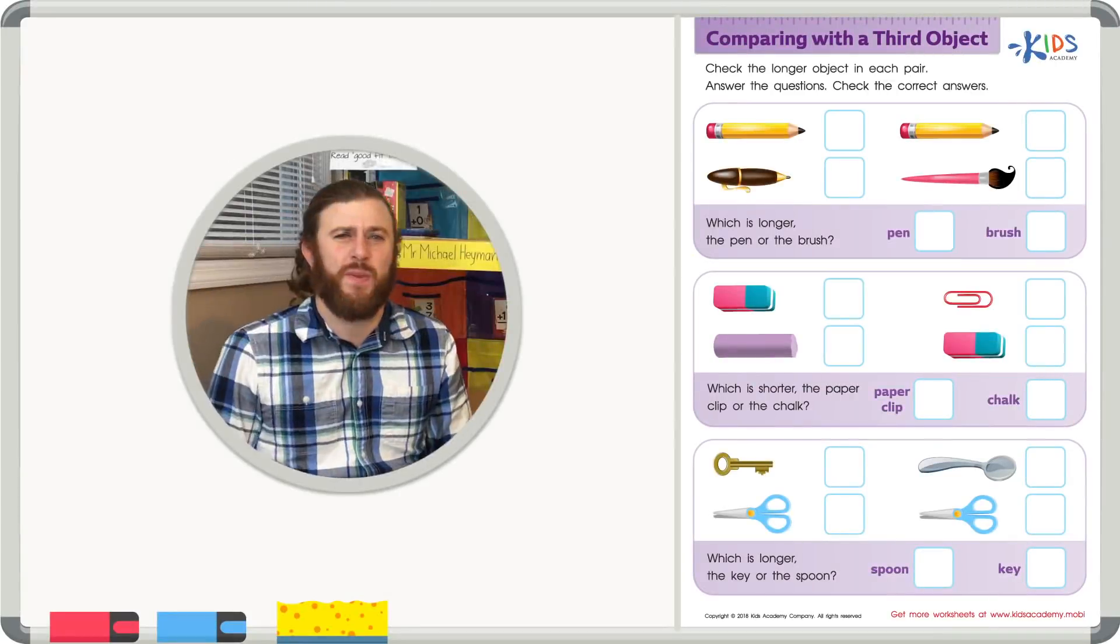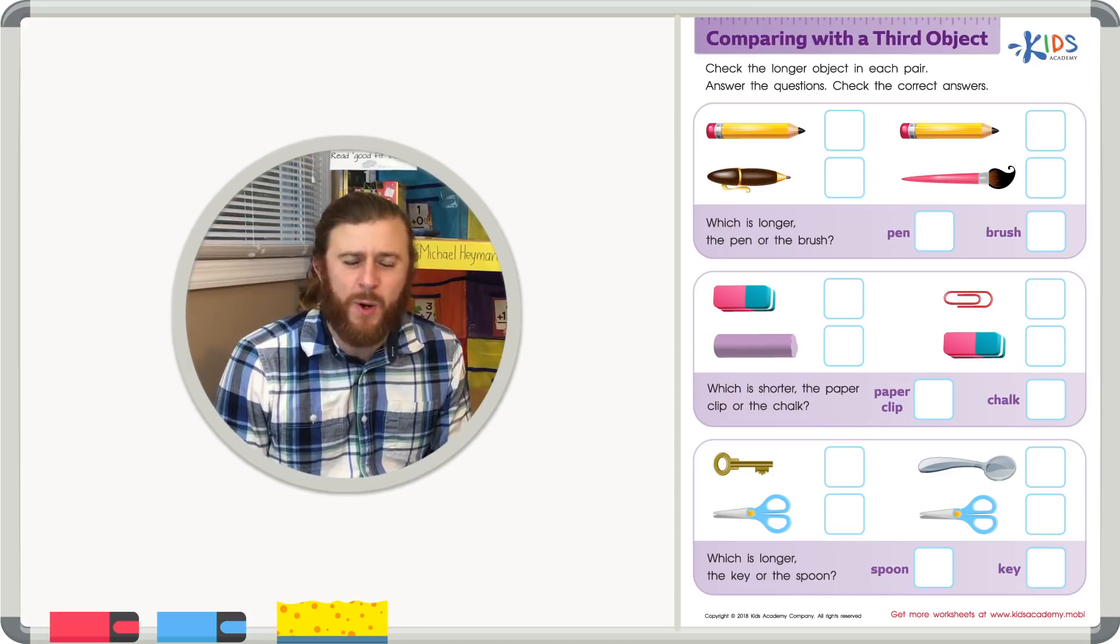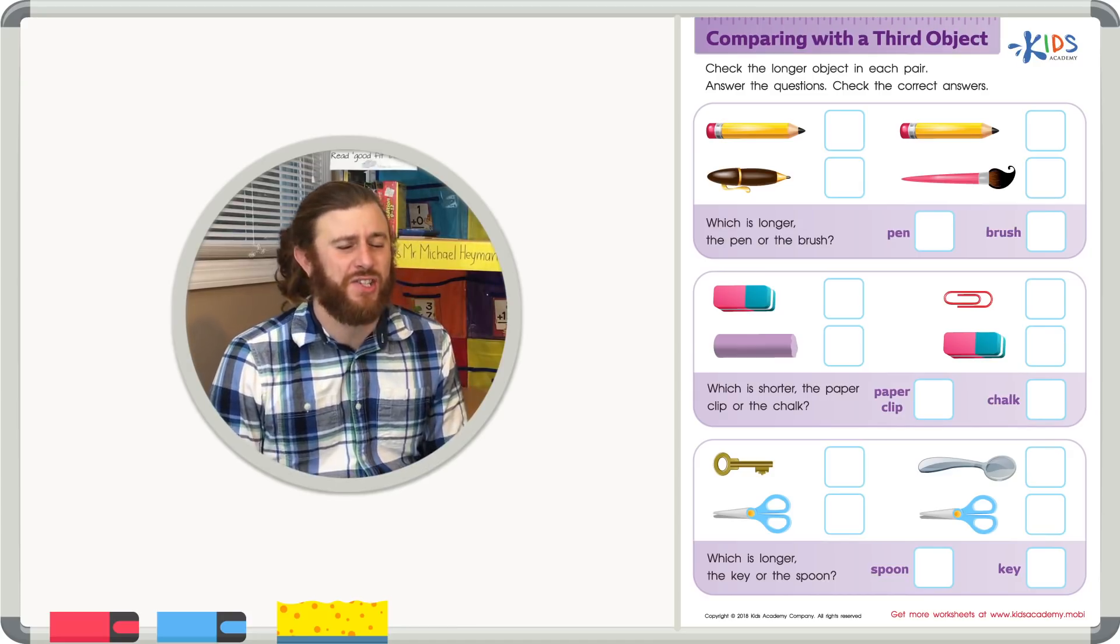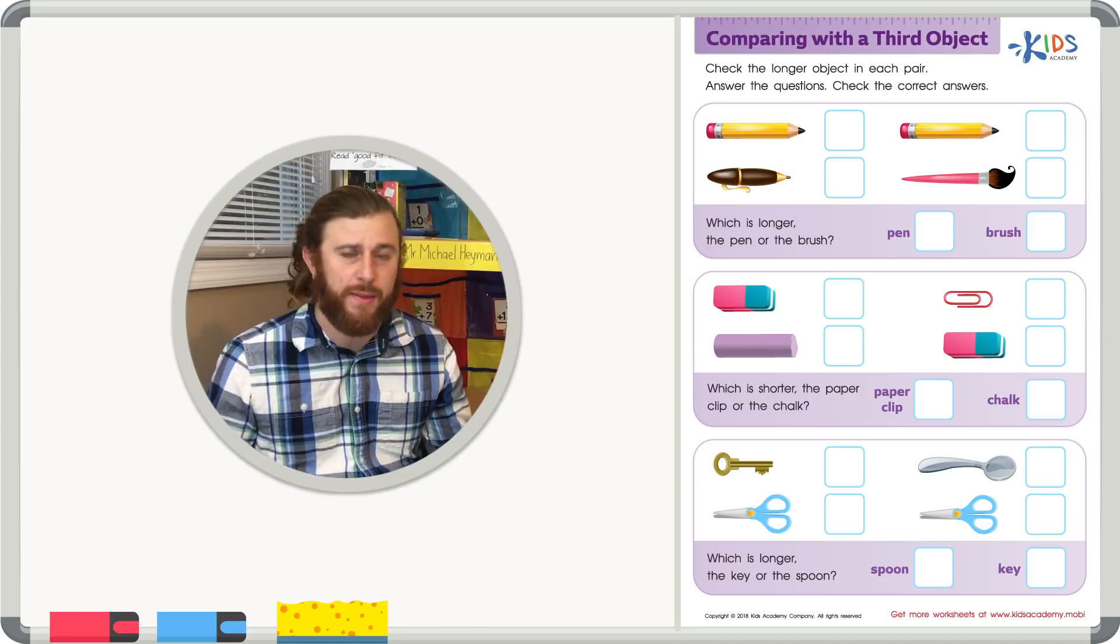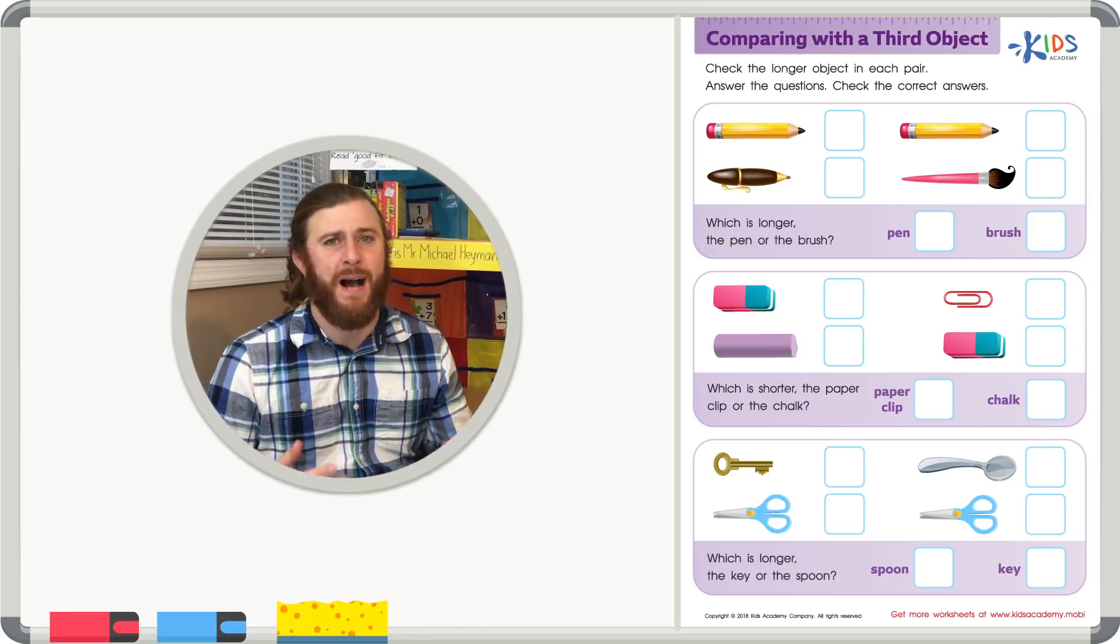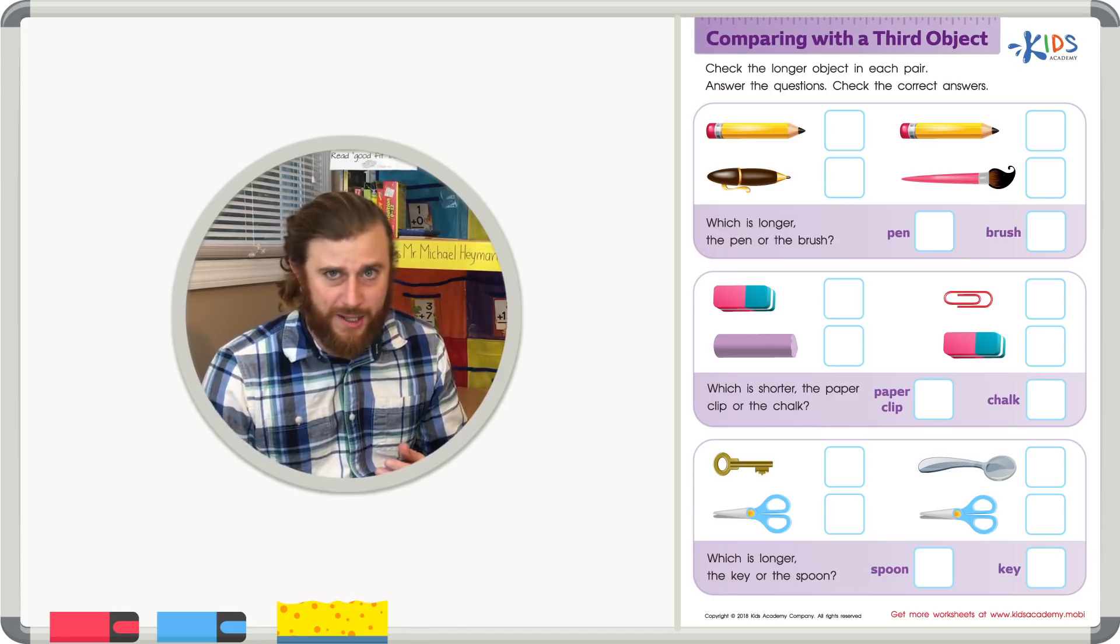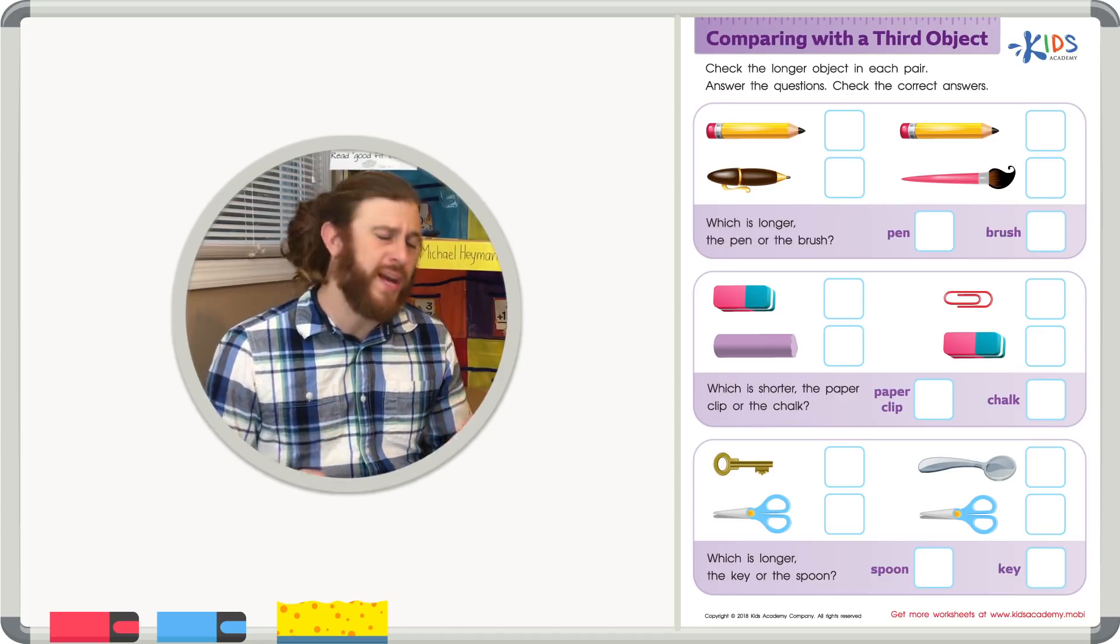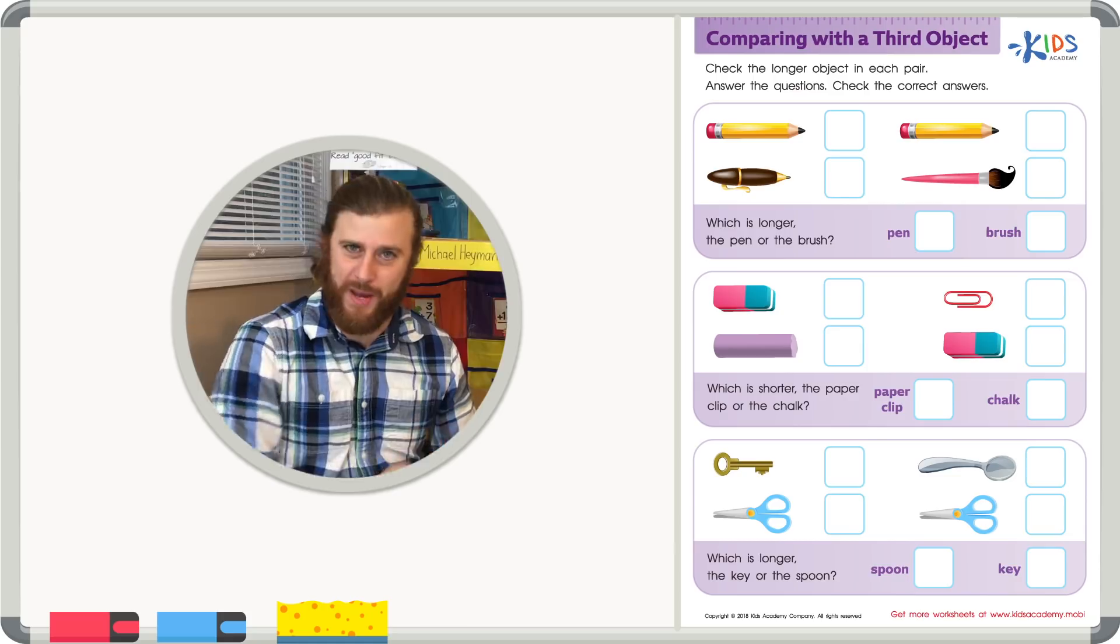Hello boys and girls, it's teacher Mike here and today we're going to be looking at a worksheet that asks us to compare objects by length. We're not going to be using a ruler today. We're going to be comparing objects with a third object. It sounds tricky, but if we get started right away, I think you'll know what I mean.